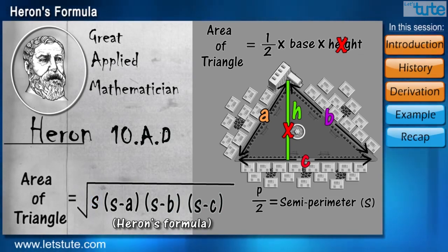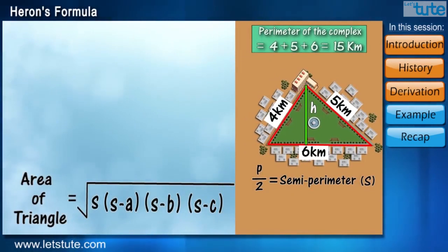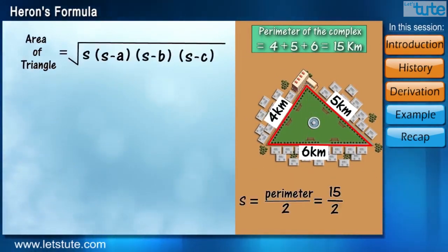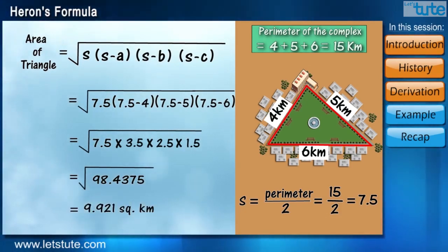You may find it a little difficult but the more you practice, you will get a hang of it and find it easy too. So, here, we do not need the value of height. And now, we can find the area of the complex with the sides 4, 5 and 6 kilometers. So, the area of the complex comes around 9.921 square kilometers.